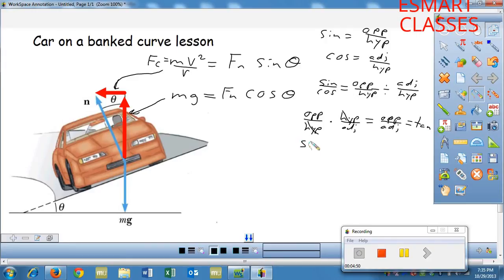Sine over cosine equals tangent. This is the trick we're going to use to simplify this whole situation.